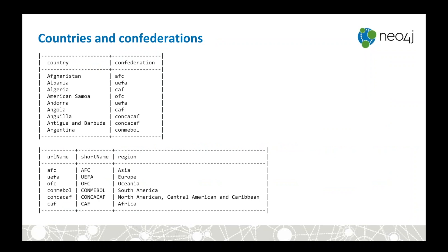A more interesting refactoring is to load in countries and confederations. Each club represents a particular country — Tottenham and Manchester United are in England, Real Madrid and Barcelona are in Spain. A confederation is an association typically covering a continent: in Europe it's UEFA, in North America it's CONCACAF. The goal is to connect clubs to countries to confederations, then query how players move between confederations.